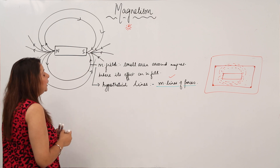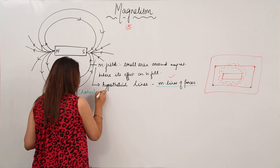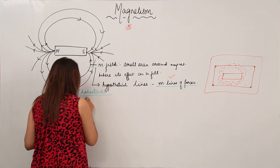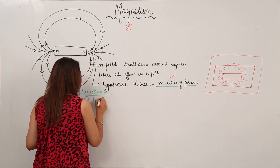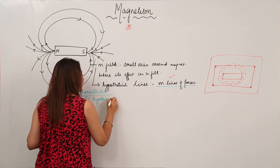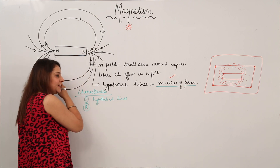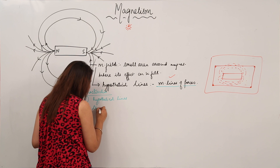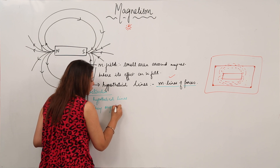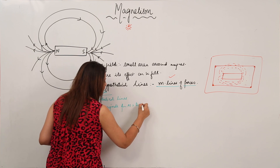Now, the characteristics of magnetic lines of forces: First, they are hypothetical — that means they are imaginary lines. Moreover, they always originate from the north pole and terminate at the south pole.